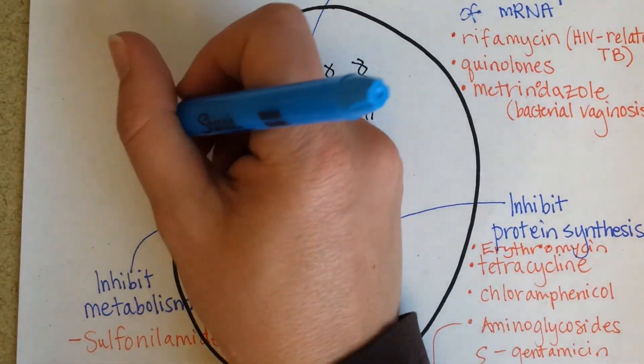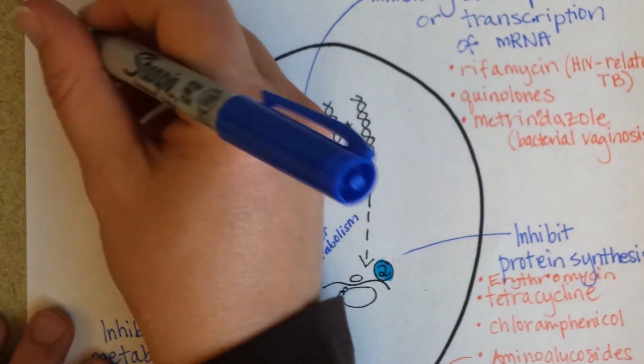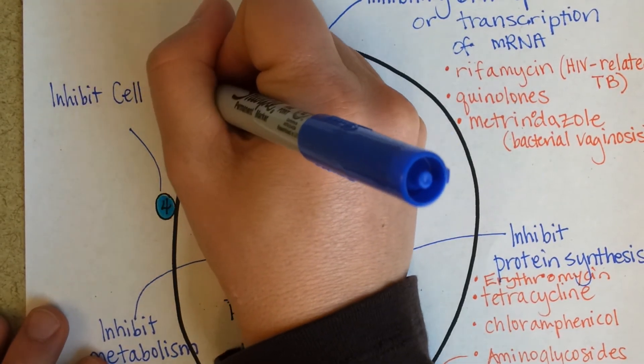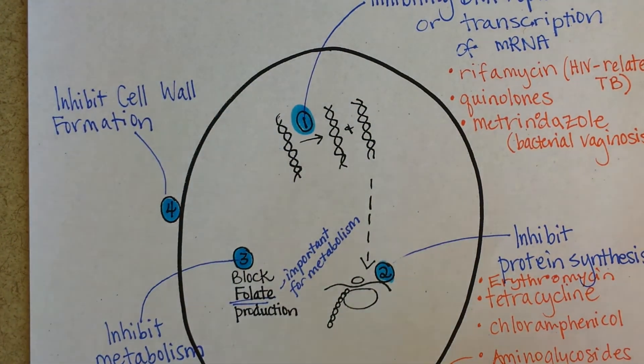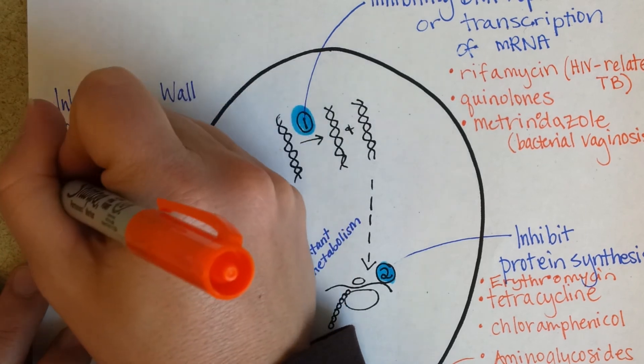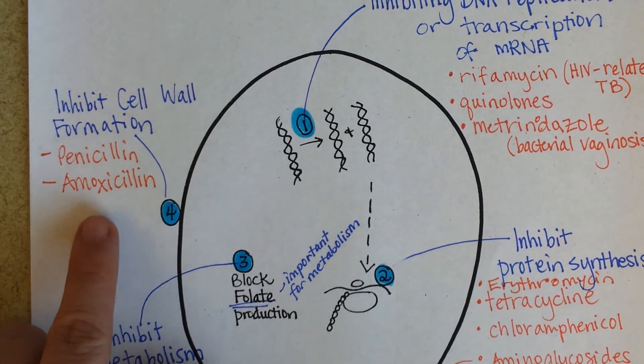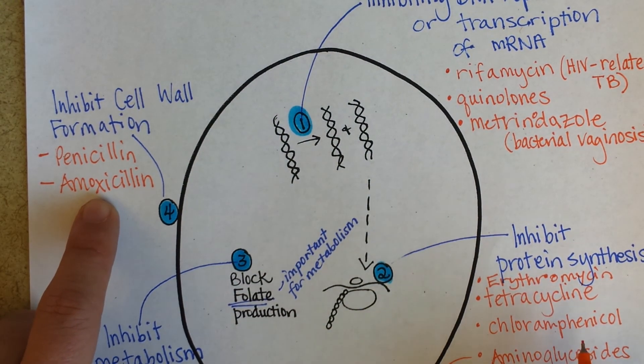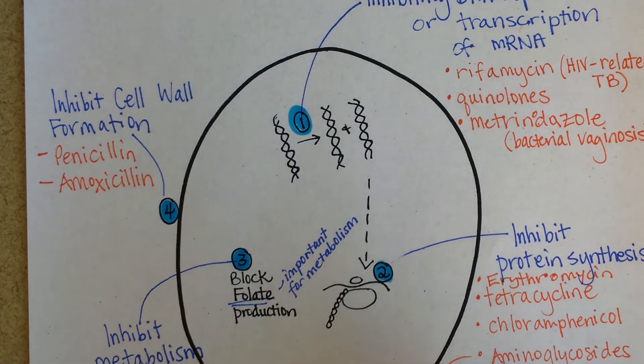Okay, and then the fourth target of antibiotics, coming out to the cell wall: inhibiting cell wall formation. And I'll give you a kind of a long list of antibiotics that work in this fashion. So penicillin is one, amoxicillin—that one's often prescribed for kids' ear infections—and as I said, if someone is allergic to amoxicillin they may be prescribed erythromycin instead. And they're different targets, but they can both still inhibit, hopefully, bacterial growth and division.